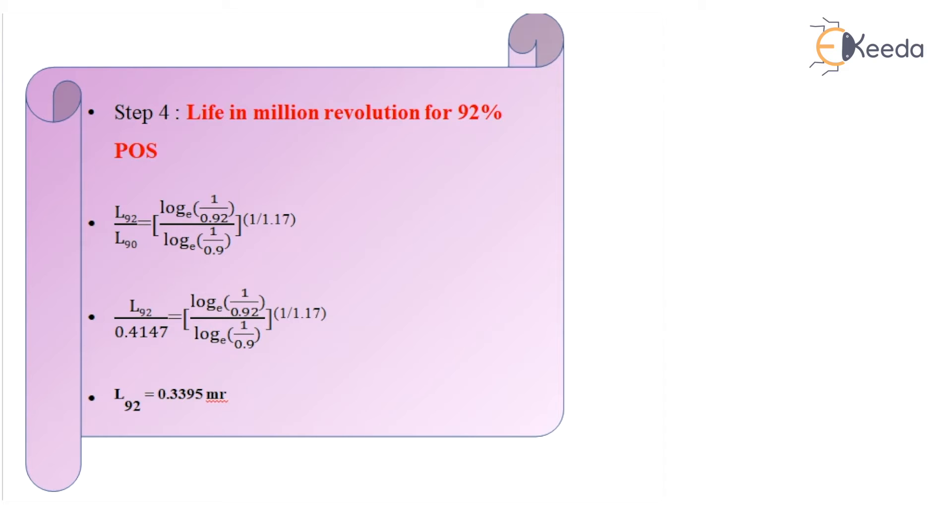Next, to find the life in million revolutions for 92% probability of survival, the formula is L92/L90 is equal to [log(1/0.92) / log(1/0.9)]^(1/1.17). So if I put the value of L90, I get the value for L92 as 0.3395 million revolutions.